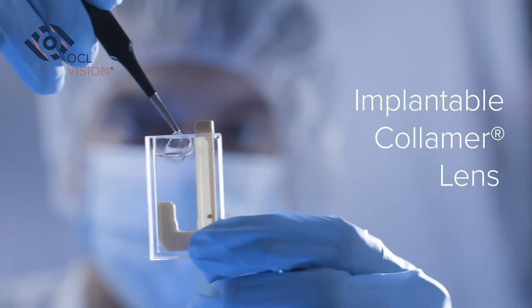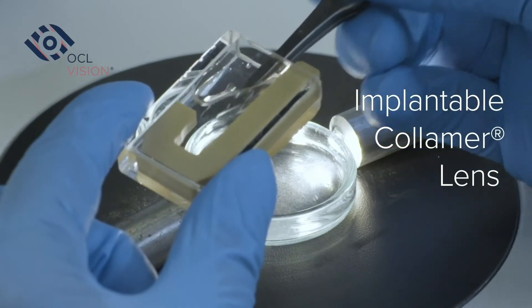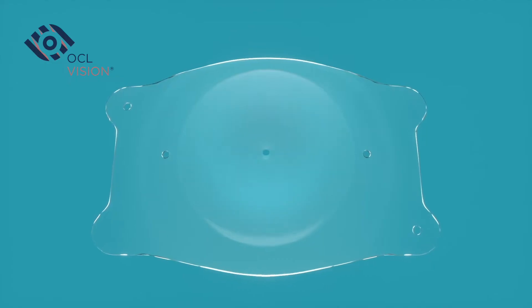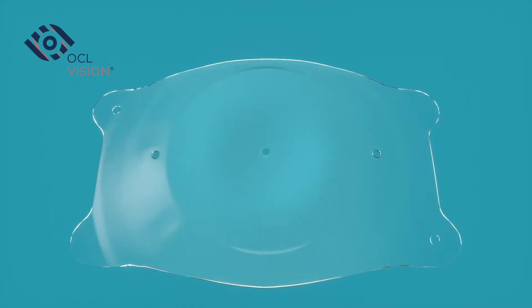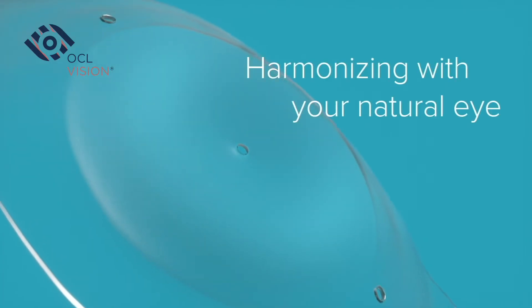EvoVision ICL is an implantable collamer lens that can correct common visual limitations like nearsightedness and astigmatism, freeing you from glasses and contacts while harmonizing with your natural eye.